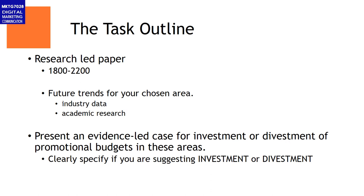That means you have to pick a side and state which side you are on. You cannot be internally contradictory — for example, saying you should get out of social media but spend more on web-based advertising. Do not be internally contradictory. Make a call: money up or money down. If you want to say invest more, give a rationale why. If you want to say invest less, give the rationale why.